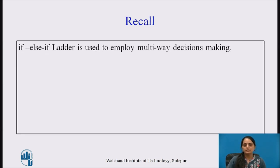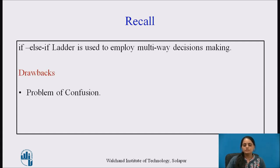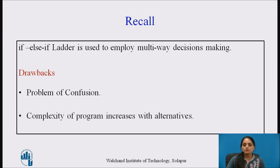Recall that in the previous video lecture we discussed about the if-else-if ladder, which is used for implementing multi-way decision making. The drawback of the if-else-if ladder is the problem of confusion. Also, whenever we use nested if or if-else-if ladder, there is a problem of dangling-else inside the program. The programmer has to take care that the corresponding else and curly braces are enclosed properly. Also, as the number of alternatives increases, the complexity of the program increases.